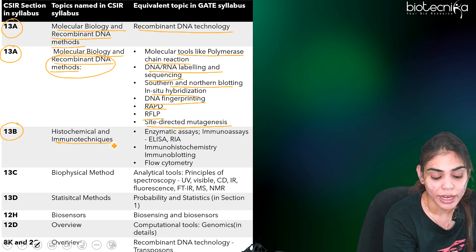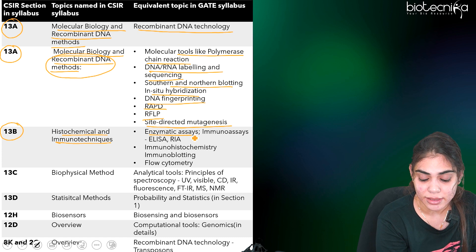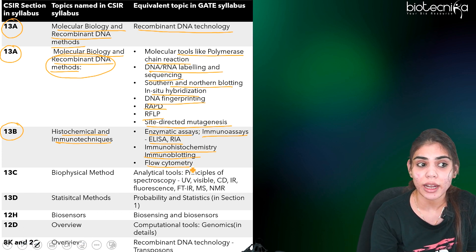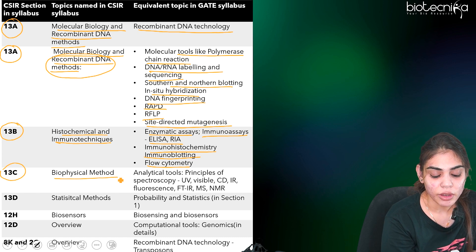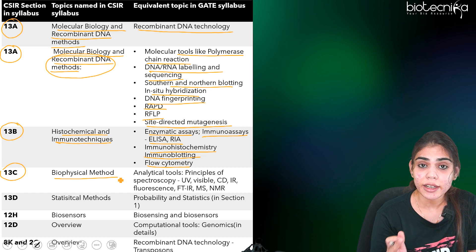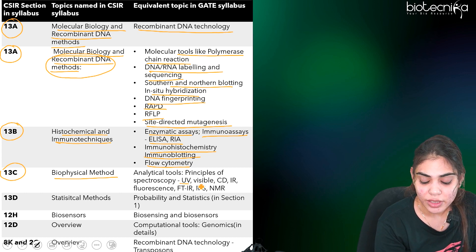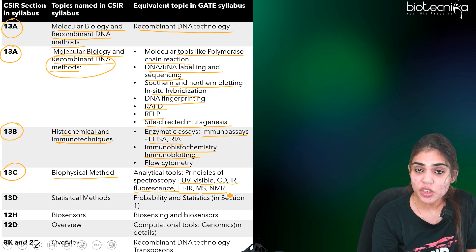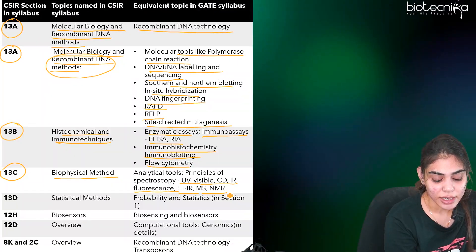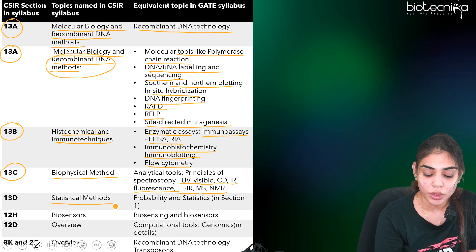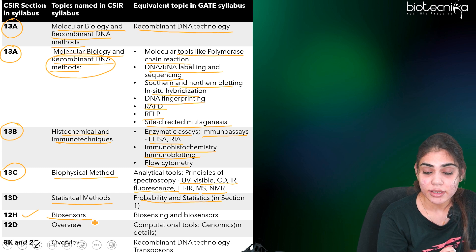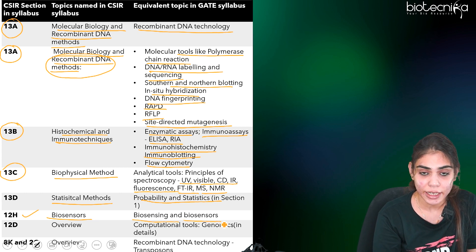The 13B part, histochemical and immunotechniques under CSIR, is similar to enzymatic assays, immunoassays like ELISA, immunohistochemistry, immunoblotting, as well as flow cytometry under GATE. The 13C part dealing with biophysical methods such as spectroscopy requires covering UV-visible, CD, fluorescence, FTIR, MS, and NMR spectroscopy, where you have to focus on the principles as well as working mechanisms of all these spectroscopic techniques.